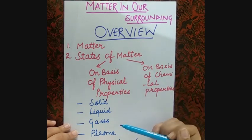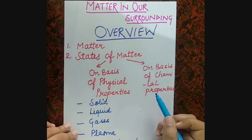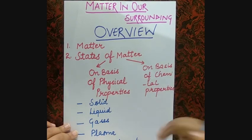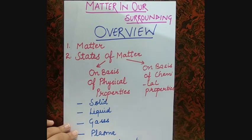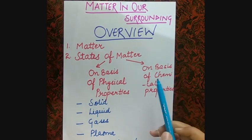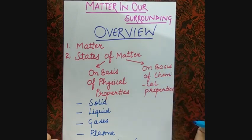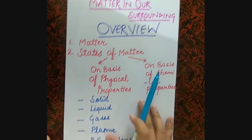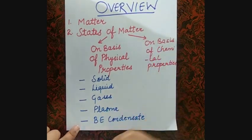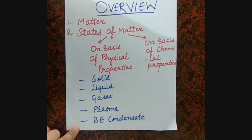On the basis of physical and chemical properties — like ice, water, vapors — these are physical state properties. Chemical properties like temperature, humidity, pressure — on these bases we have formed five states of matter. Solids are materials having definite mass and definite shape.